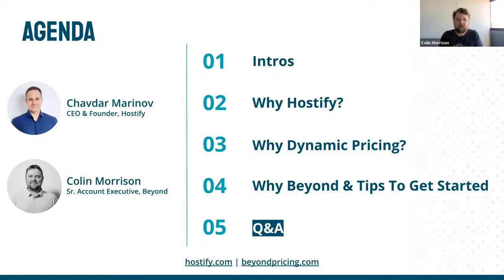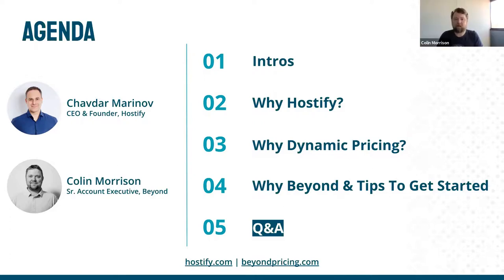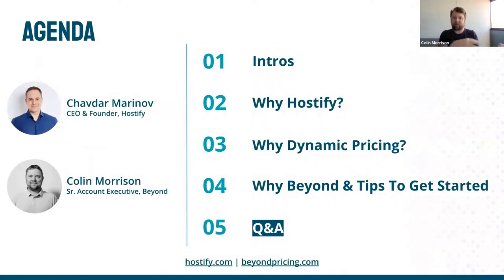Do you offer the same rates on your website or on the OTAs, or how do you apply a difference with the commissions? Beyond Pricing connects directly with Hostify and pushes rates into Hostify. We get the base pricing from Beyond Pricing and based on that we put channel-specific markups for the different OTAs. For example, you can put a 10% markup for Airbnb or a 20% markup for Booking.com — so you're pretty flexible to have different price strategies across many different OTAs. A lot of our clients do that to cover the cost of the OTAs and to encourage people to book direct. You're never going to outspend the OTAs on advertising, so marking those rates up to cover some or all of the OTA commission costs is a great feature configured through Hostify.